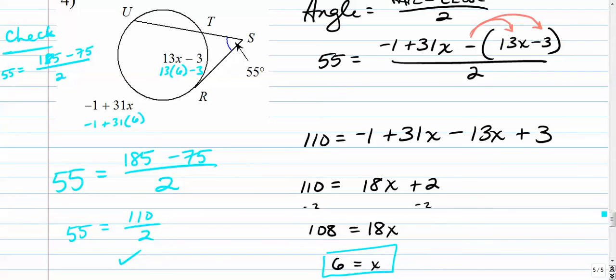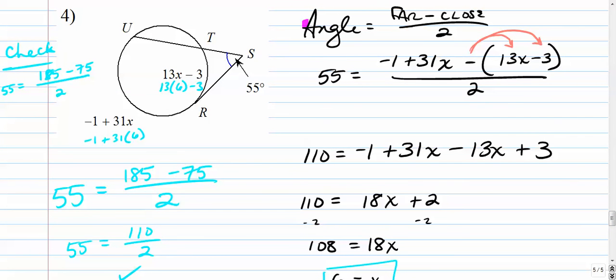So there we go: tangent-secant angles, not that much different than secant-secant angles. It follows that same pattern where you take the angle equal to the far away arc minus the close arc over two.